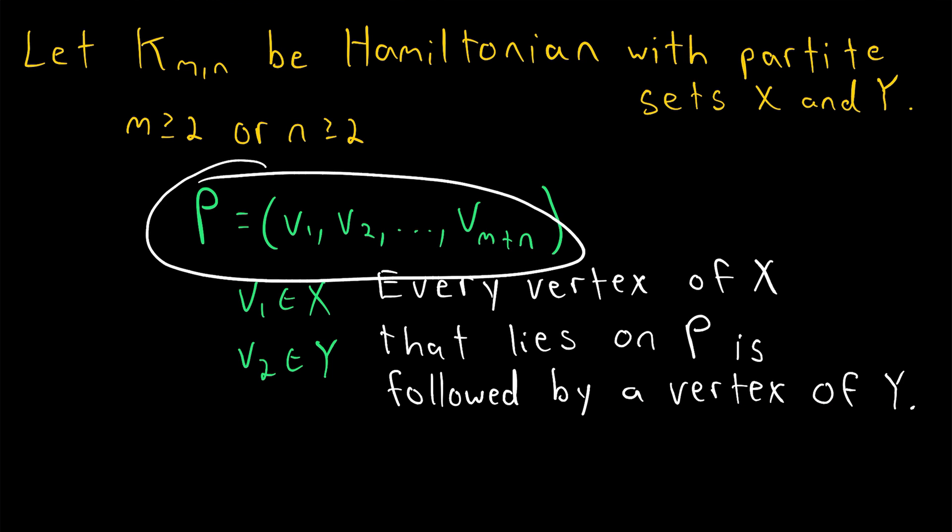So every single vertex of X that lies on this path is followed by a vertex of Y. Now, that means that our path P must have the same number of vertices from X as it does from Y. But since it has all vertices of X and all vertices of Y, that must mean that X and Y have the same cardinality. Therefore, m and n, which are the number of vertices in the partite sets, the cardinalities of the partite sets, that means that m equals n. And since at least one of them has to be greater than or equal to 2, it must be the case that they are both greater than or equal to 2, since they are equal. That completes the proof.